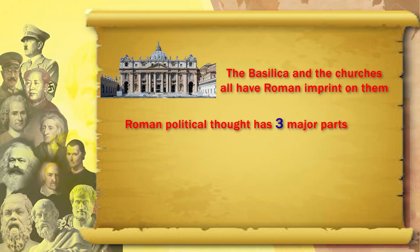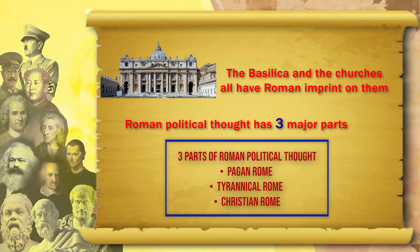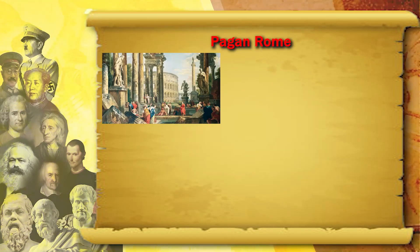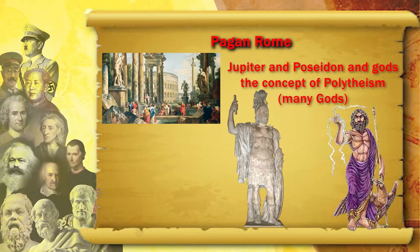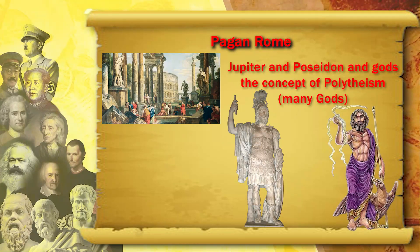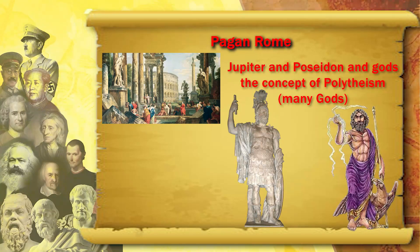Roman political thought and state formation has three major parts. The first is pagan Rome, which had Jupiter and other pagan gods and the concept of polytheism — many gods: Poseidon, Jupiter, and many others.